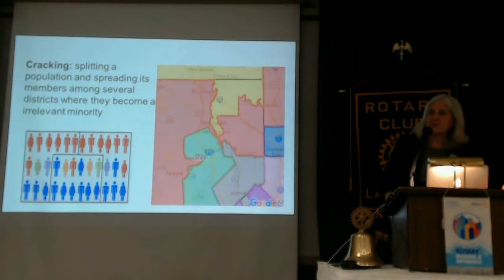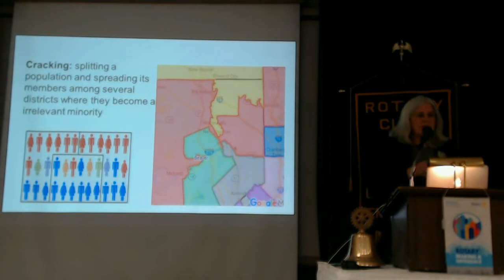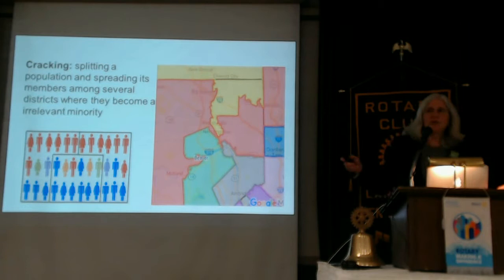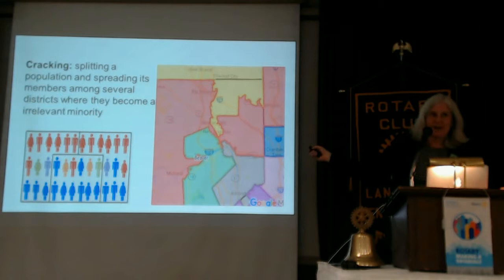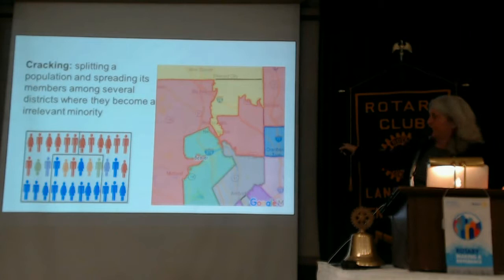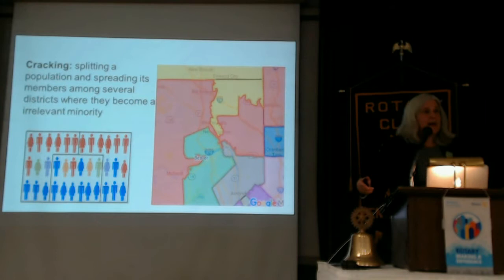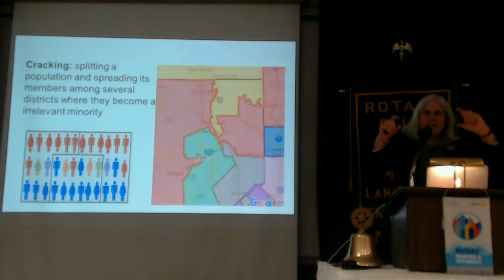There are a couple other forms of gerrymandering. One is called cracking. Cracking is when you take a community and divide it out so that it doesn't really have any power. If you look at our small cities across Pennsylvania, you'll see an incredible amount of cracking. Beaver Falls, for example, is an urban area divided into four house districts with all kinds of weirdness. The effect is that community loses its voice — instead of having its own representative, it's an immaterial piece of four other districts. That's cracking.